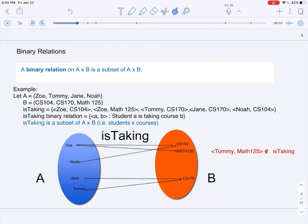Now you'll notice that we listed all of the ordered pairs in that binary relation, but we also want to give an example of an ordered pair not in that binary relation. For example, we have Tommy taking CS-170, but Tommy is not taking Math-125.